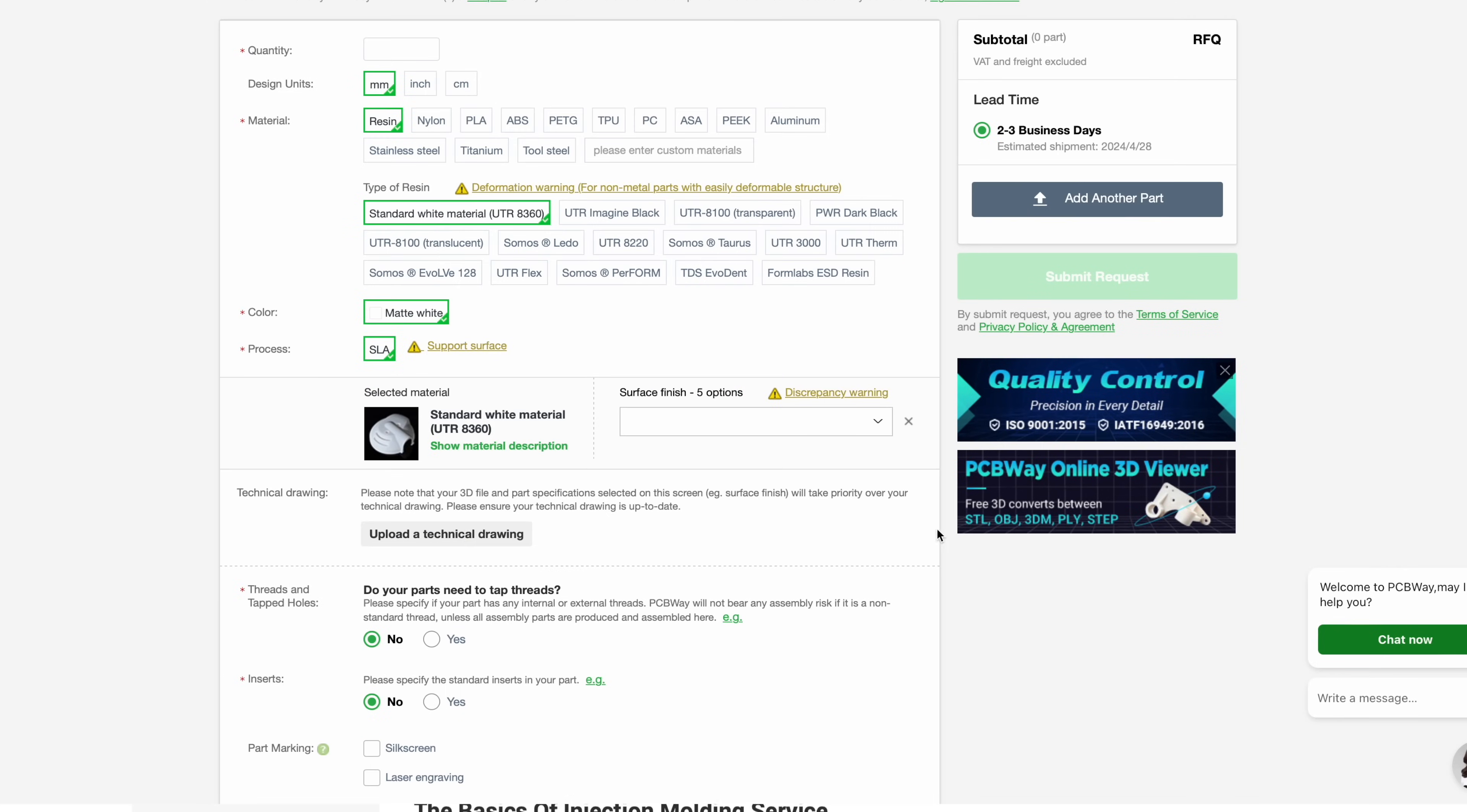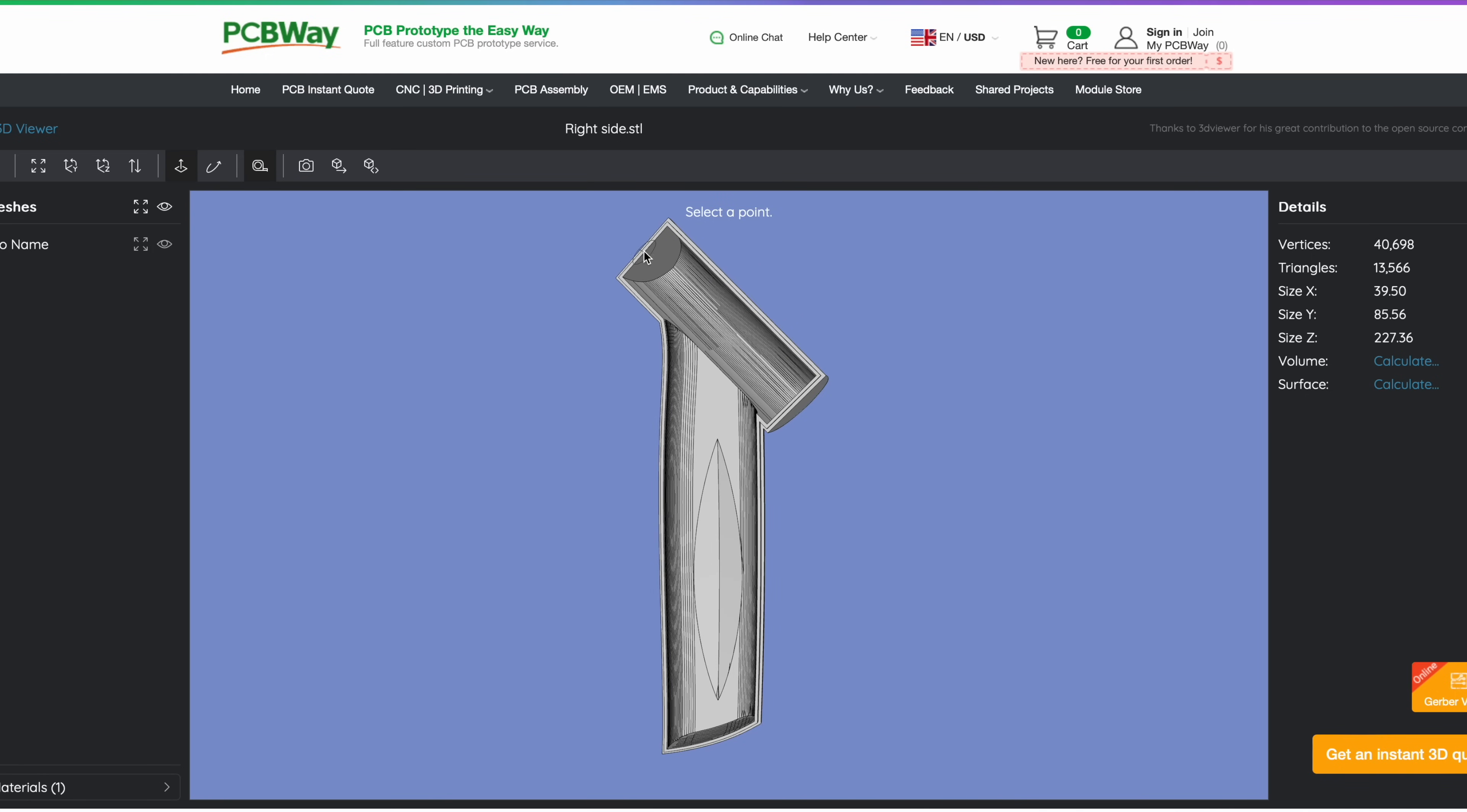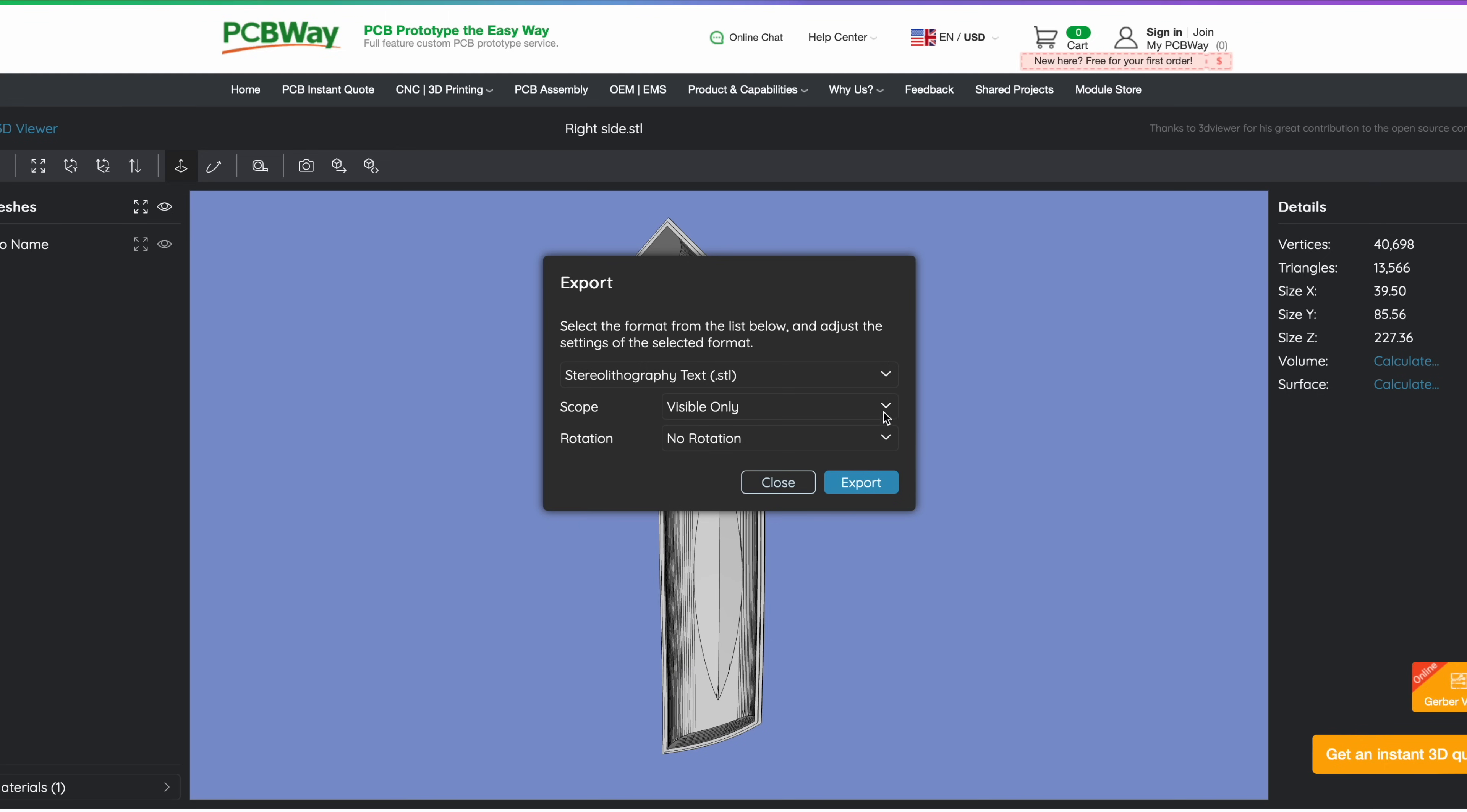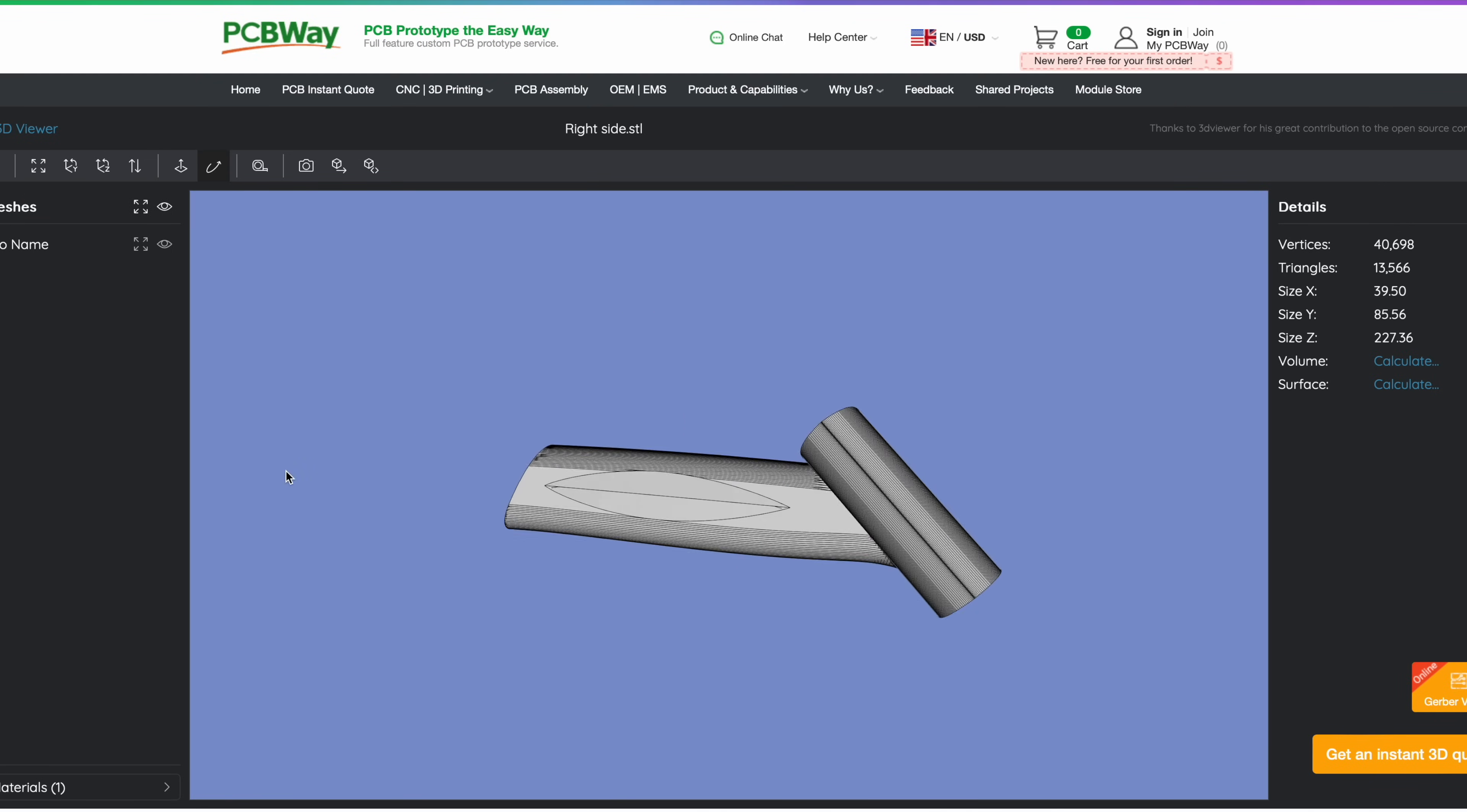Hey, did you know that this video sponsor PCBWay has an online 3D viewer? You can upload your STL files, do measurements on them, take photo shots, and export to different file formats. So this is a great resource for you and potentially for clients to view parts. Check them out for your next project. Link in the description below.